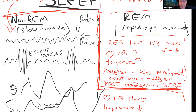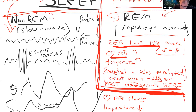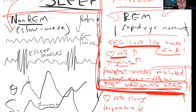If you wake up from REM sleep, you're pretty much awake and know what's going on. But if you're roused from slow wave sleep, it takes a while to function because your brain is kind of turned off. In REM, your EEG looks like it's awake; heart rate, temperature, and blood pressure are going up; skeletal muscles are paralyzed so you don't act out your dreams. Most dreams occur in REM, though some do occur in non-REM.